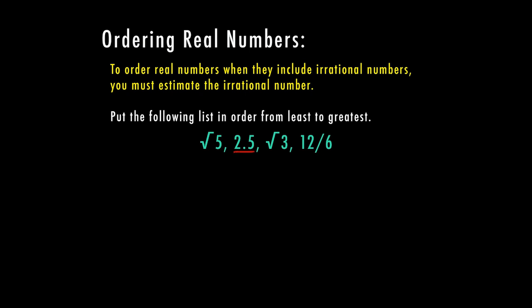Two and a half is already a decimal. 12 over six is a fraction, but we can easily turn that into a decimal by dividing. So 12 divided by six equals two. Then we have the square root of five and the square root of three. So the square root of five — if you haven't watched the other video — you're going to have to estimate. And that's going to be between the perfect square that comes before five, which is four, and the perfect square that comes after five, which is nine.